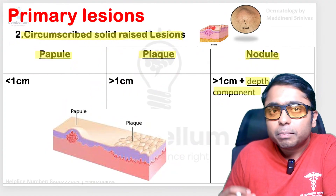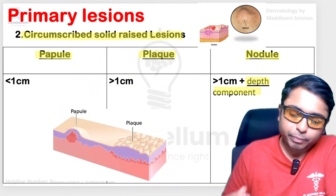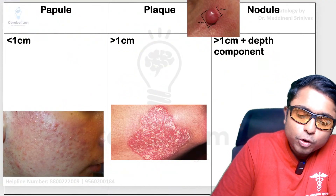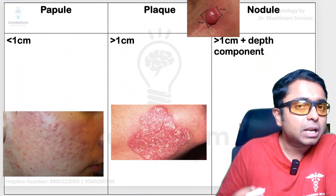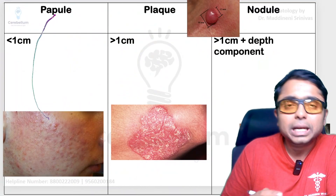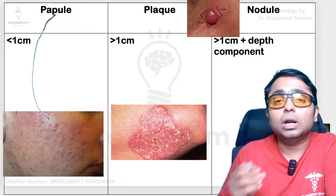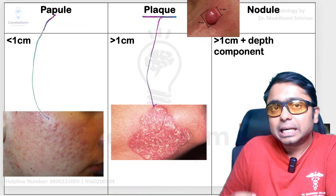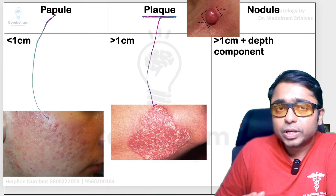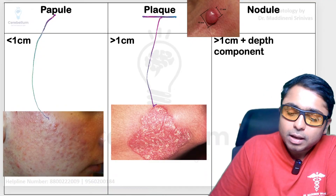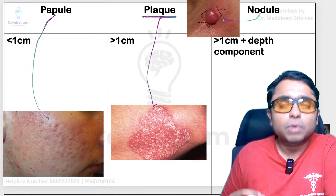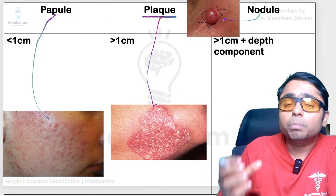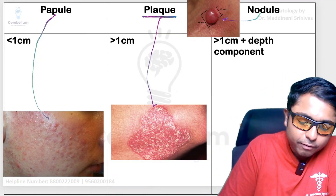Nodules will be better palpated than seen. All of you might have experienced or seen acne vulgaris — there will be small red colored bumps on the face, and these are called papules. A raised lesion more than one centimeter in size we call a plaque. For nodules, you are able to see this is one nodule which is more than one centimeter in size, but if you try to palpate it, it becomes more clearly evident.